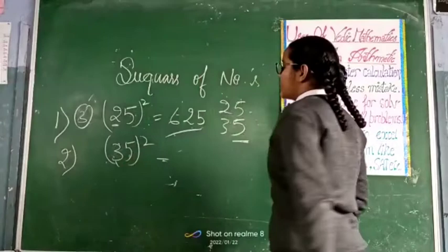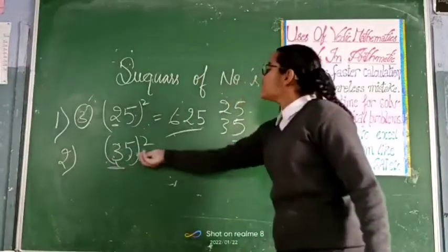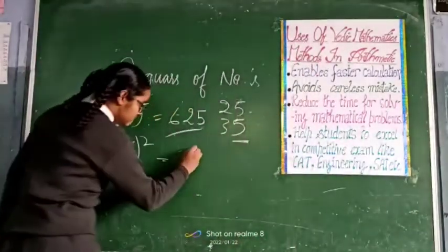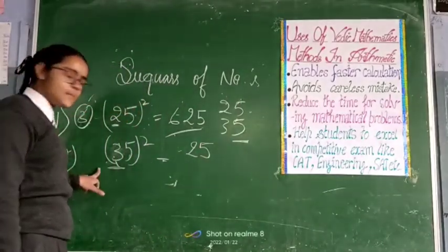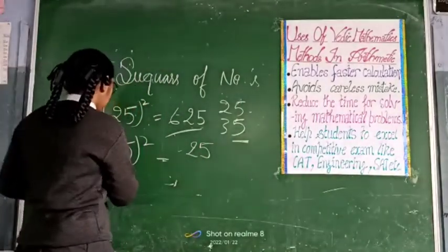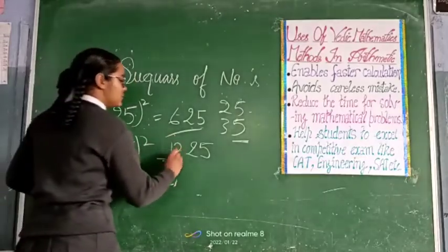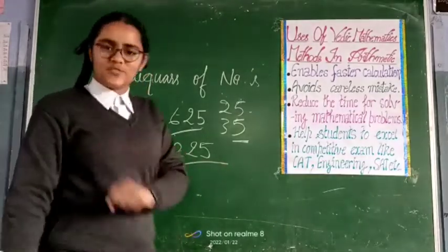So, 5 into 5, 35 square. If we calculate here, 5 into 5 makes 25. And its next number is 4. When you multiply 4 by 3, it makes 12. 12,025 is your final answer.